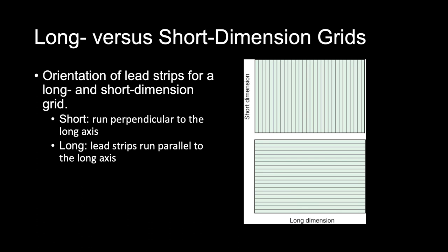Linear grids can be constructed as either a long dimension or a short dimension. A long dimension linear grid has lead strips running parallel to the long axis of the grid, while a short dimension linear grid has lead strips running perpendicular to the long axis. For a 14 by 17 grid, a long dimension grid has lead strips 17 inches long, whereas a short dimension grid has lead strips 14 inches long. A short dimension grid may be useful for examinations where it is difficult to center the CR correctly, making it more forgiving.